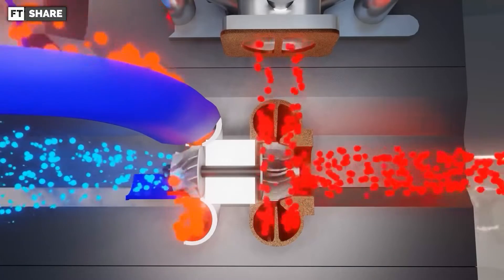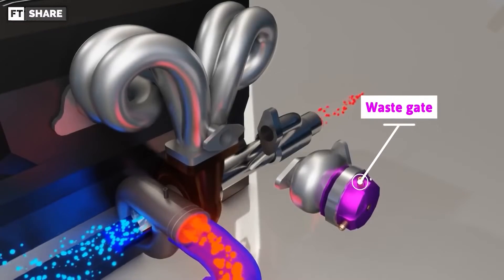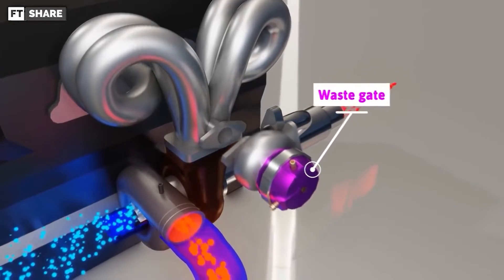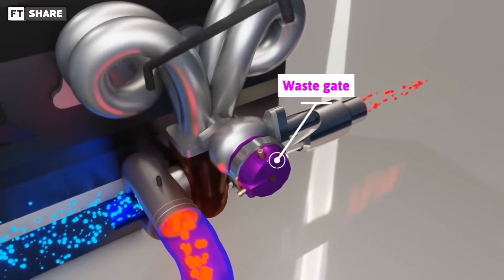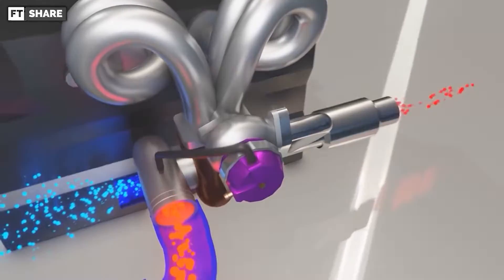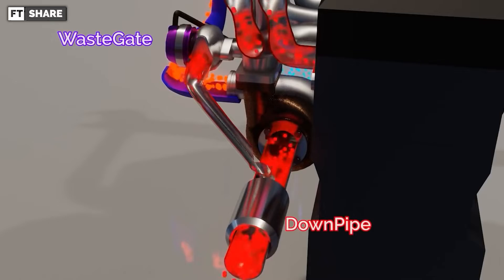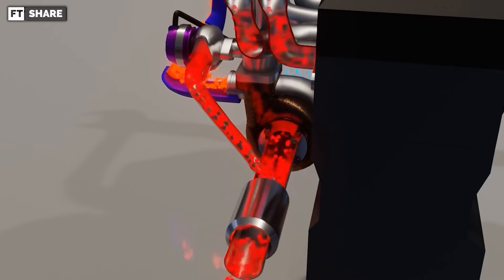To address this excessive boost issue, we need to add another component called the wastegate to the turbo. This device is there to bypass the exhaust gases so they don't get through the turbine wheels and go straight to the downpipe, or in some types of turbos with larger sizes, directly outside. The idea is to slow down the turbine wheel and reduce the boost generated by the turbo.